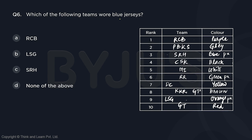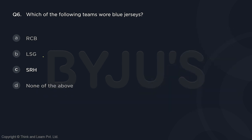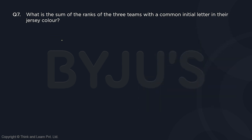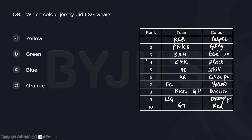Question six: which team wore blue jerseys? Blue is worn by SRH at rank three — option C. Question seven: what is the sum of ranks of the three teams with a common initial letter in jersey color? Blue, black, and brown all start with B. Blue is rank three, black is rank four, brown is rank eight — sum is 3 + 4 + 8 = 15. TITA answer: 15. Question eight: which color jersey did LSG wear? LSG wore orange — option D.